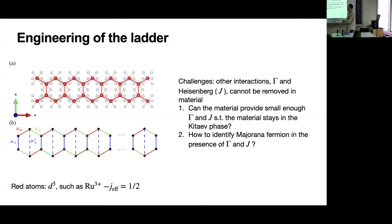There are some challenges. When you introduce such engineering, there could be other interactions - Heisenberg or Gamma interactions that cannot be removed. Some research has discussed that with small Heisenberg or Gamma interactions, they remain in the same phase, but there's a question of how to identify Majorana in the presence of other interactions. Also, the insulating barrier may disturb the perfect octahedral structure.